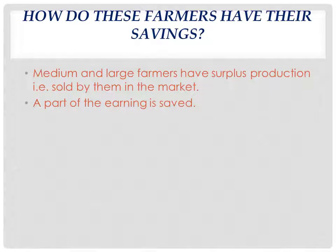Some crop production is consumed by their family members, and the remaining is known as surplus production, which is sold in the market. Surplus production means the production that is left after consumption. When they sell this surplus production in the market, they get money which is saved by them and used next year to purchase agricultural inputs.